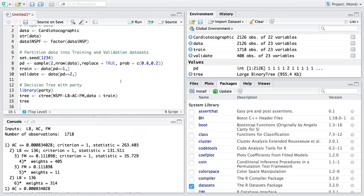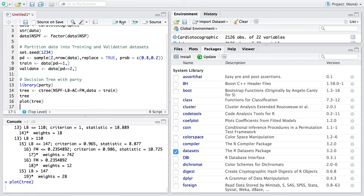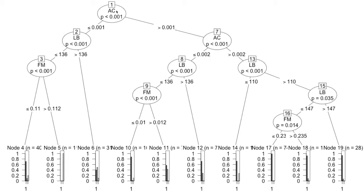If you want to look at the picture, you can plot it. This tree is generally upside down — you have the root at the top and the leaves are at the bottom. The most important variable to the prediction model is basically at the top. Out of the three variables we have used, ac is the most important variable in helping to classify the observations into 1, 2, and 3, which is normal, suspect, and pathologic. So if ac is less than or equal to 0.001, you go on the left side, otherwise you go on the right side. Similarly, if lb is less than 136, you go on the left side, and if it is more than 136, you go on the right side.